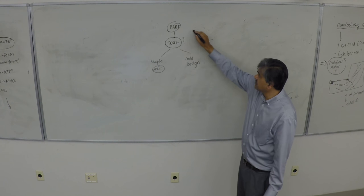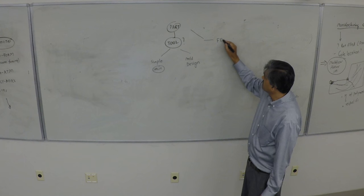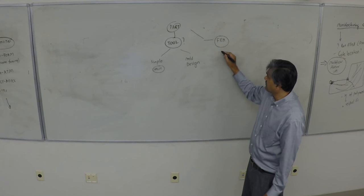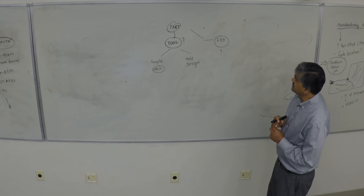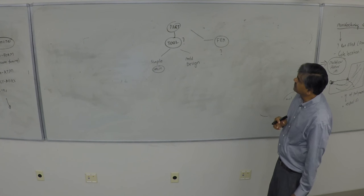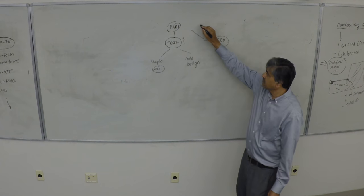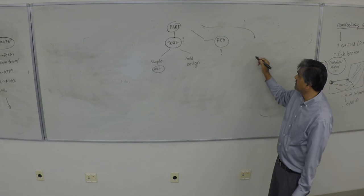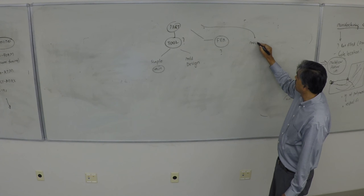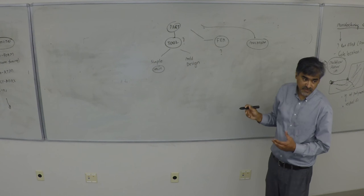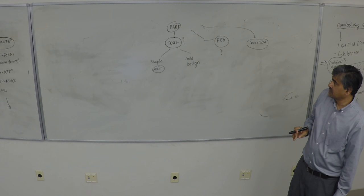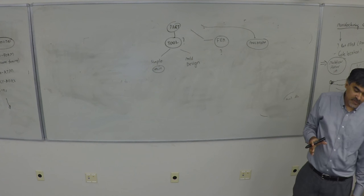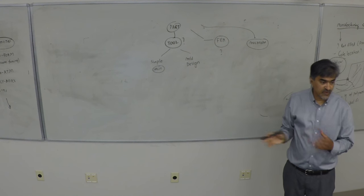The other thing we'll do is, from within the part environment itself, how to run FEA — it's pretty straightforward. The third thing is how to take the part through a mold flow simulation. If you loaded your Autodesk license correctly in the first week or two, you should have access to all of these.